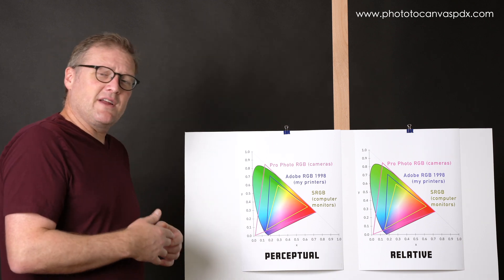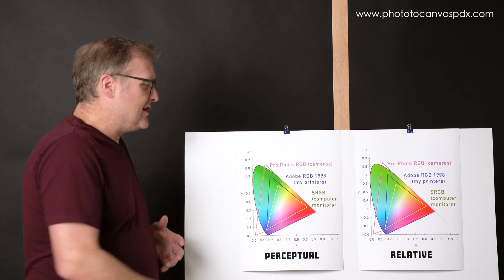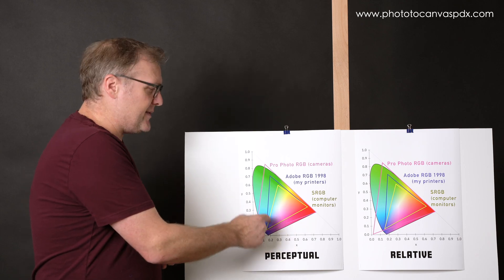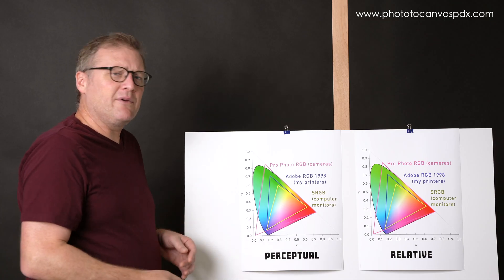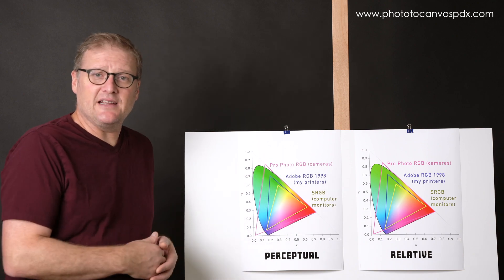The triangles represent what colors can be shown in those gamuts. Now relative colorimetric and perceptual are different ways of dealing with the colors that are out of gamut. So if you're printing in Adobe RGB, the blue triangle, what happens with colors outside of that blue triangle, if they are contained in your image.